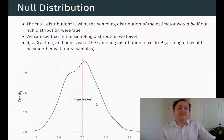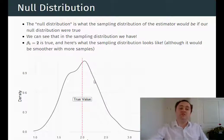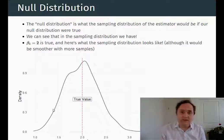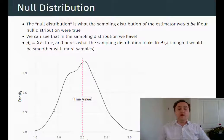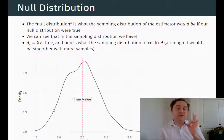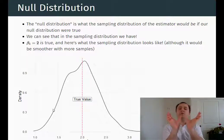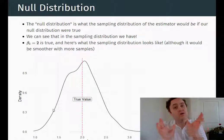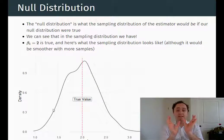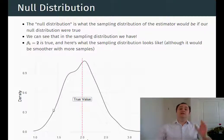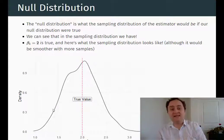If we assume the null is true and say, okay, if it's actually two, here's the distribution I would expect to see — even though we know it's two, we would still get a lot of variation across samples. Our question is: is the estimate we actually got so unlikely on this distribution that we can say the null is not true? Because if the null value is true, we know what the sampling distribution is. We also know what estimate we actually got. If what we got is very unlikely to occur if the null is true, then one of those two things must be false — and since we actually did get this estimate, it's got to be the null that's false.